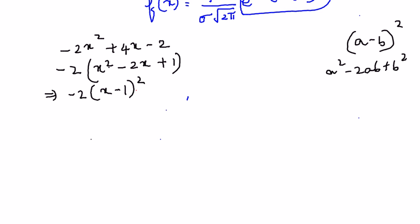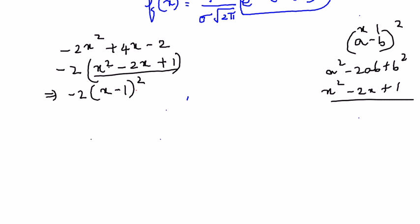In the place of a we have x and in the place of b we have 1, so this becomes x² − 2x + 1. This is what we have here, and that's why we write it as (x − 1)².